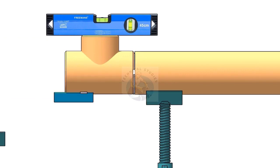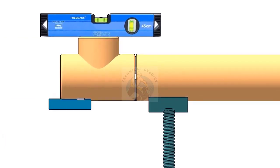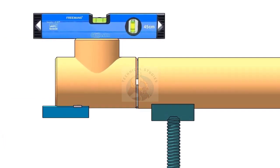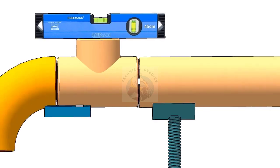Tack weld the piece of angle below the T if you don't have a ready-made pipe clamp. The size of the angle cleat may vary according to the size of the elbow. Here I am using a 50-50 angle because the pipe diameter is 6 inch.